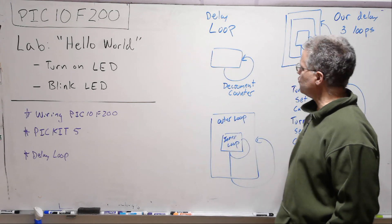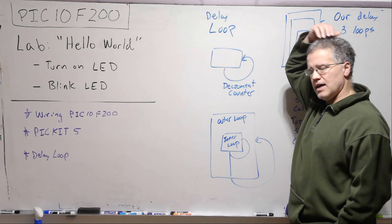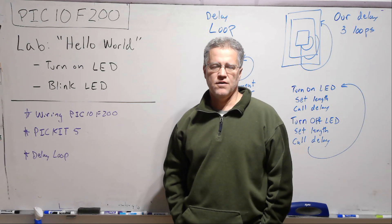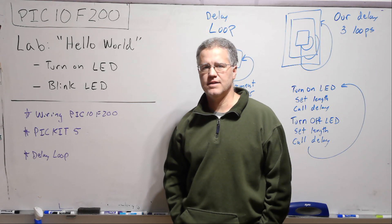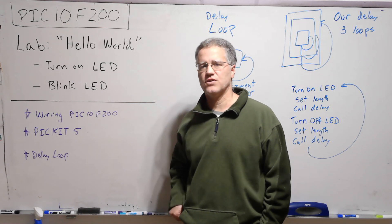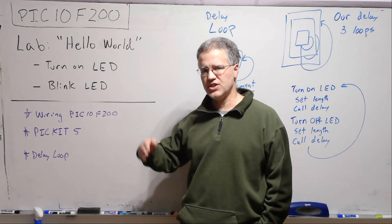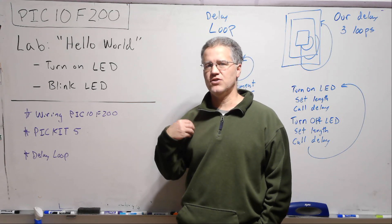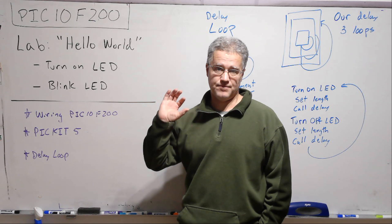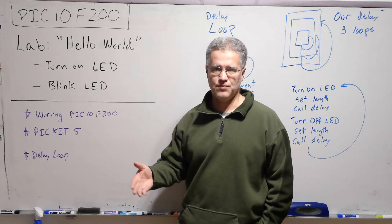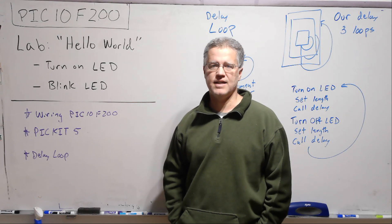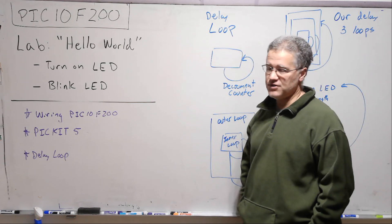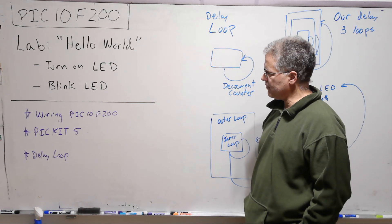The clock speed of the PIC10F200 is 4 megahertz and the instruction cycle is one fourth of that — so 1 megahertz. If we just turn on and off an LED at that speed we would never be able to see it, so we need to introduce a delay. In assembly there's no sleep or time delay function that you call like there is in Python, so we have to do it with assembly code.